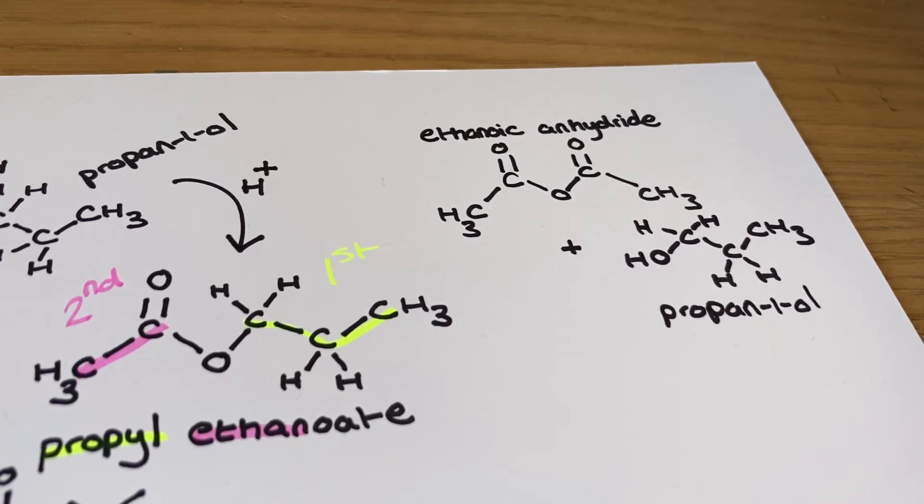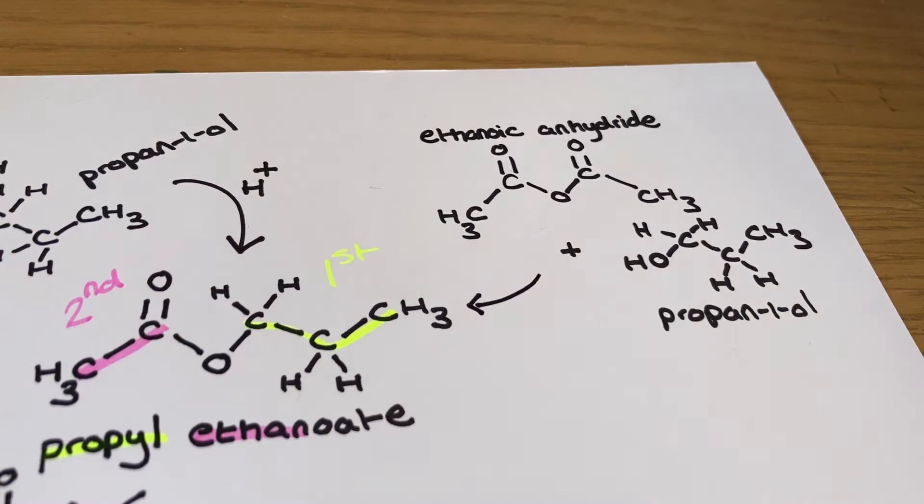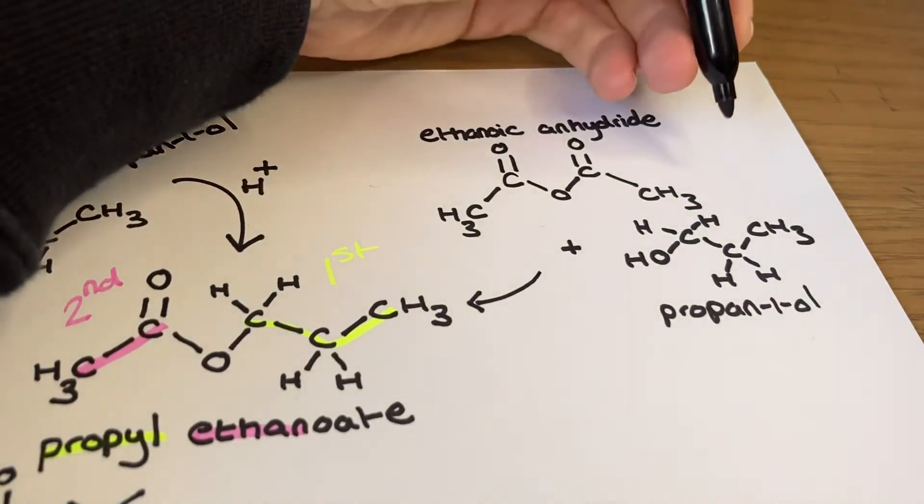For this reaction, in addition to the ester being made, a carboxylic acid is also formed as a product from the other half of the anhydride.